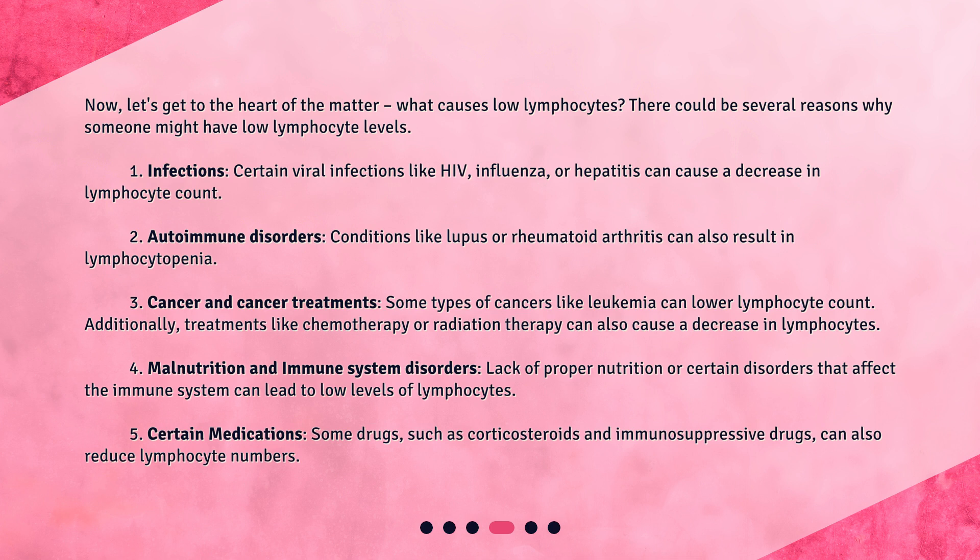Fourth, malnutrition and immune system disorders: lack of proper nutrition or certain disorders that affect the immune system can lead to low levels of lymphocytes. Fifth, certain medications: some drugs, such as corticosteroids and immunosuppressive drugs, can also reduce lymphocyte numbers.